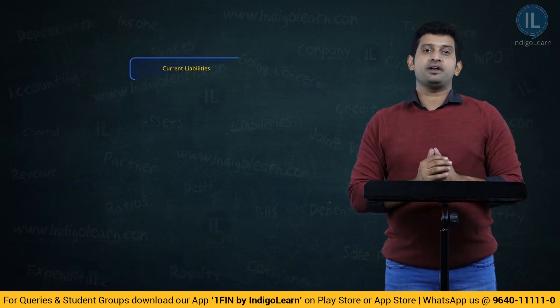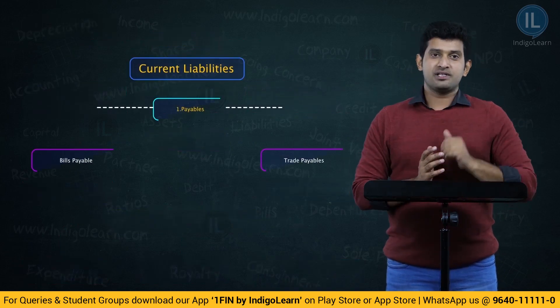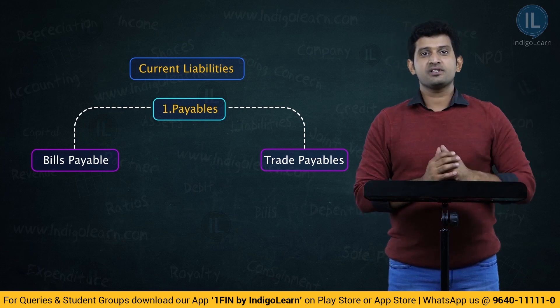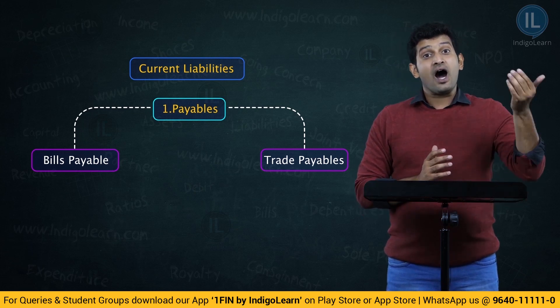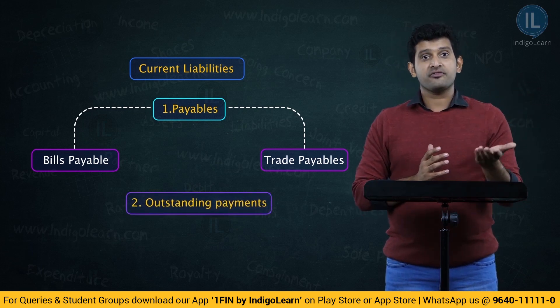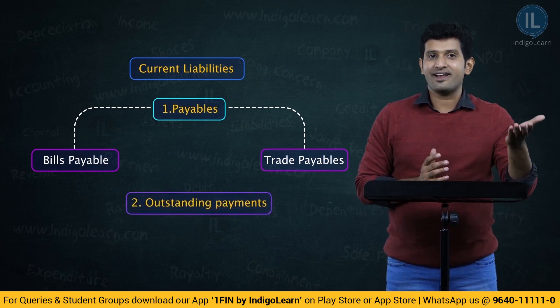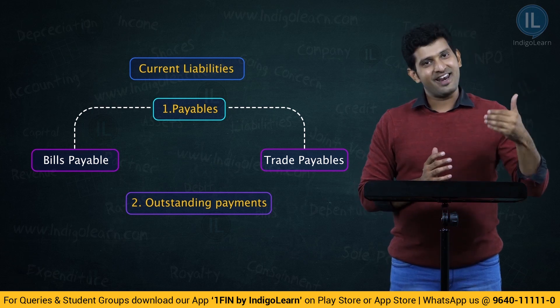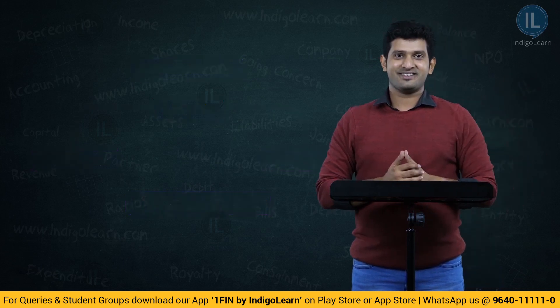Moving on to current liabilities: payables — that is trade payables and bills payables — and then outstanding payments in the form of wages or salaries. These two will be seen majorly as current liabilities.